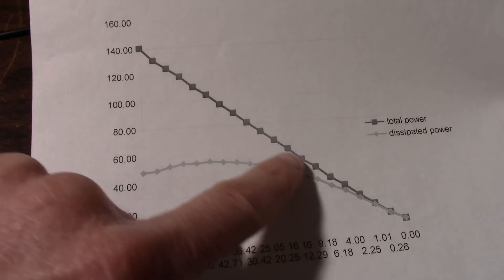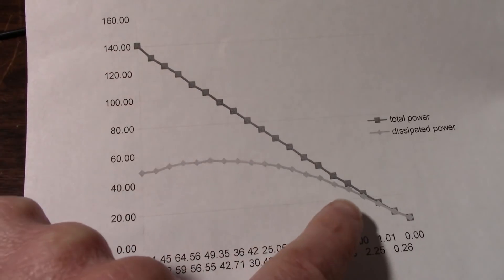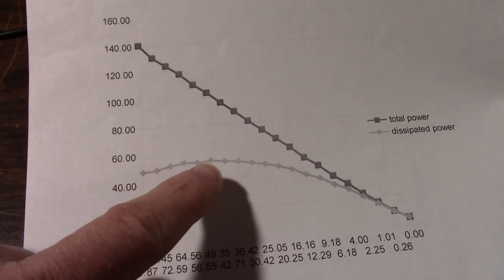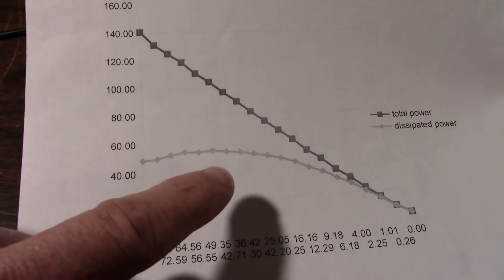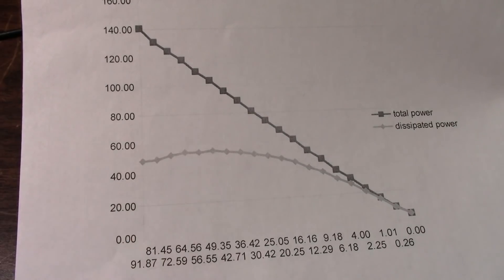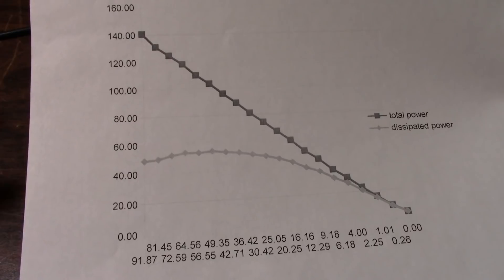I have the total power drawn off the supply, and this is the dissipated power, meaning dissipated by the circuit, not the output power, but dissipated by the board. In other words, the transistors and resistors on the board.